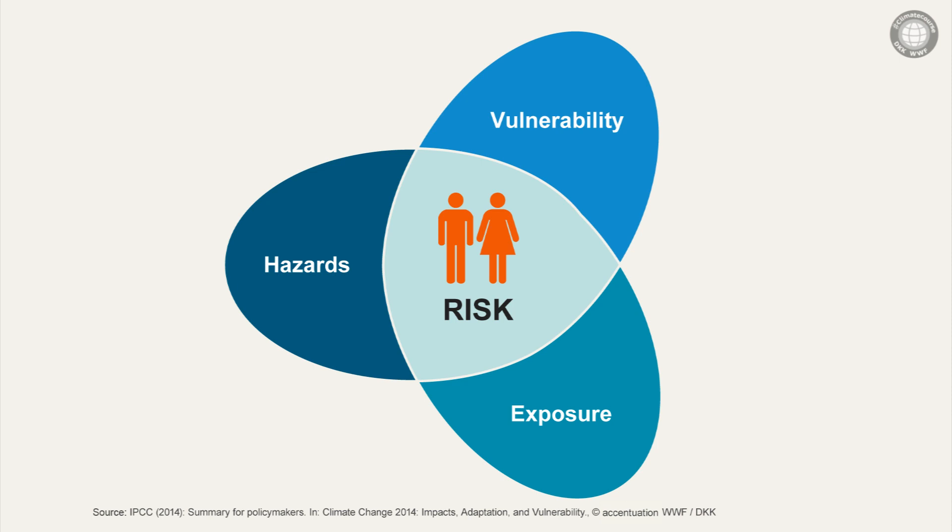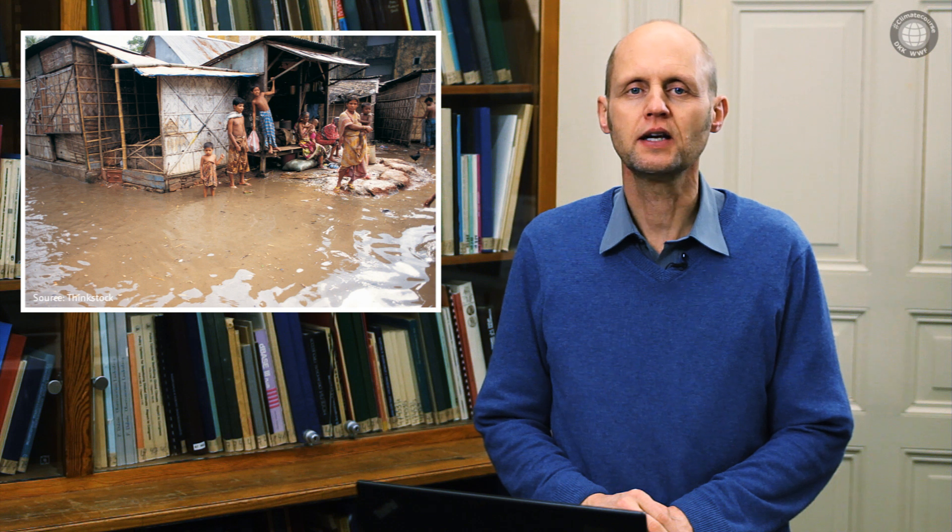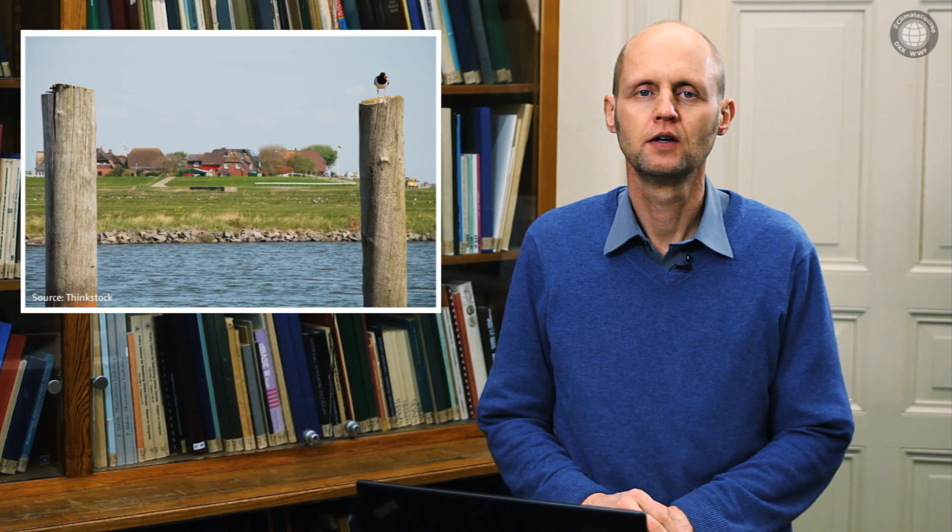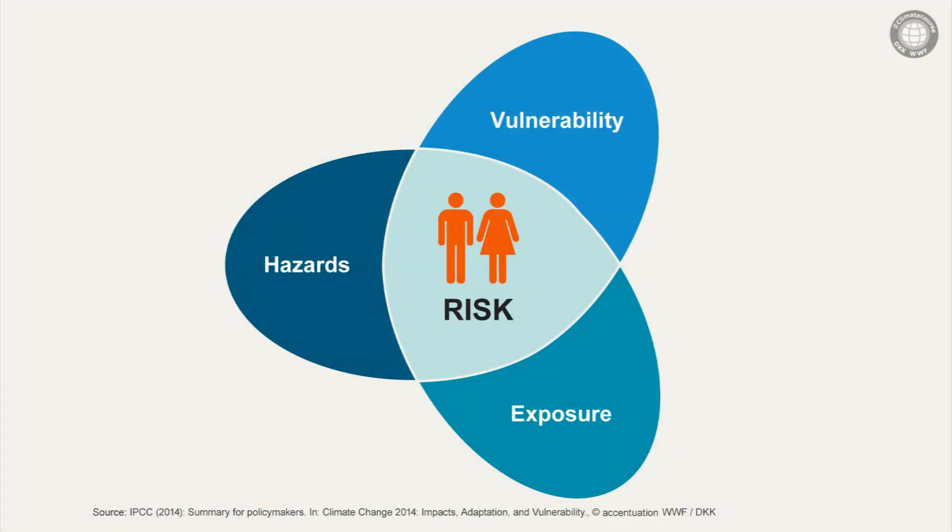What options do people have to adapt to this change? The risk associated with various climate impacts entirely depends on the social conditions of the affected people. The same level of flooding affects a person in Bangladesh quite differently compared to a person in northern Germany, for example. Vulnerability is higher in poorer countries and thus increases the risk associated with the impacts of a specific climate or weather event.